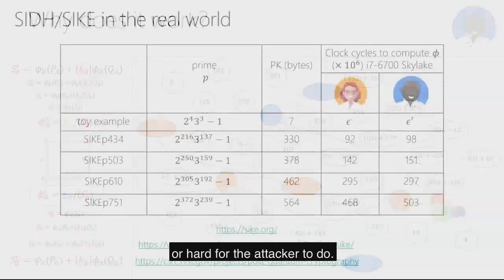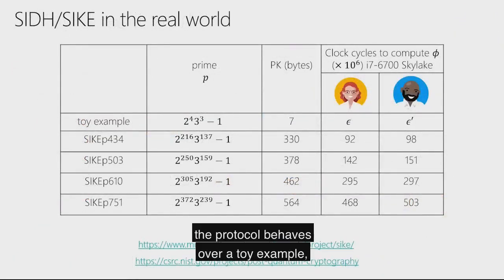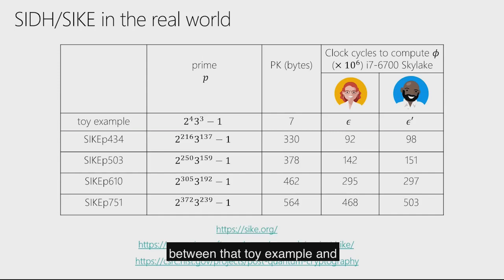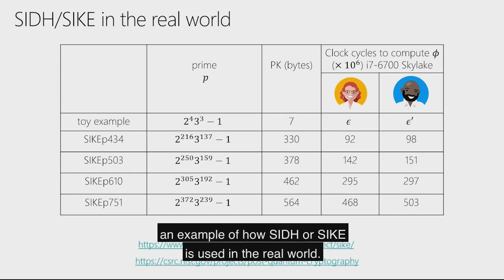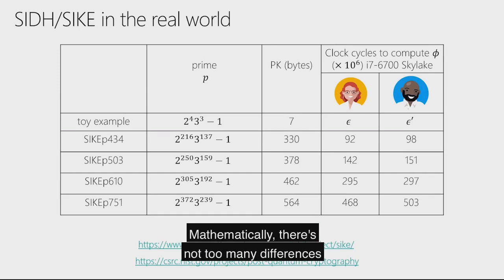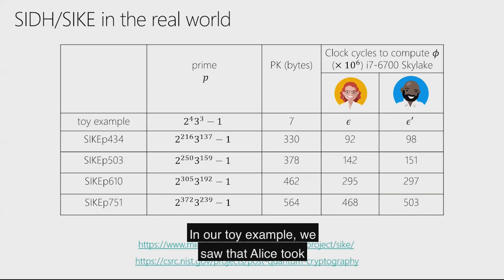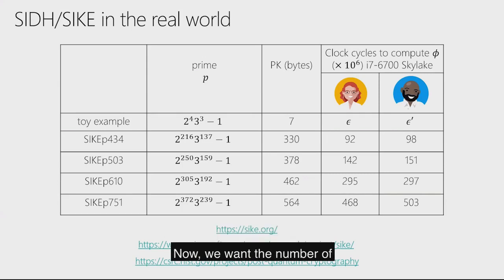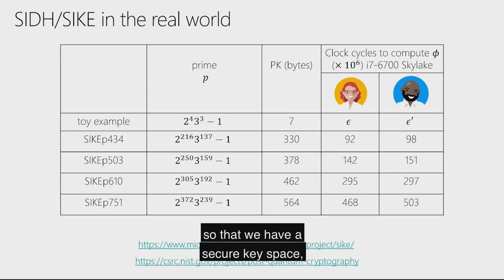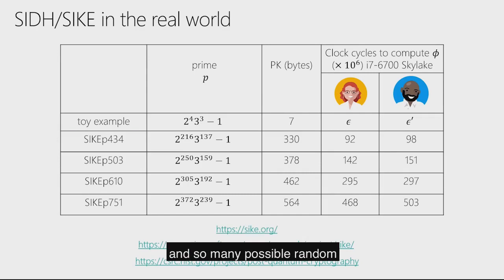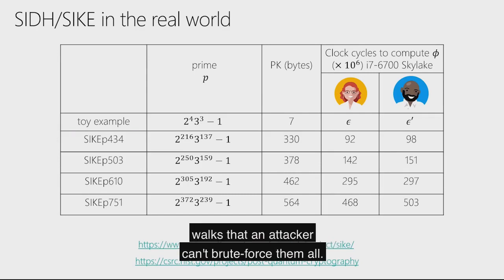Alice and Bob have landed on the same node and used the SIDH protocol to arrive at the same secret J value. All the information the attacker has is the curve they both started on, the two curves they sent over the wire as public keys, and the attacker is tasked with figuring out where they both walked to. The assumption is that this is hard for the attacker to do. Now that we've seen how the protocol behaves over a toy example, it's time to look at what changes between that toy example and how SIDH or PSIKE is used in the real world.